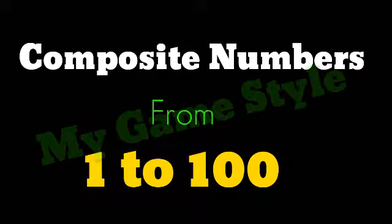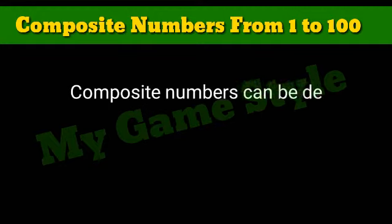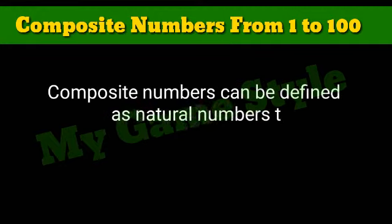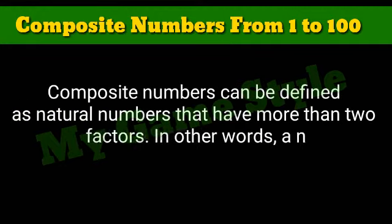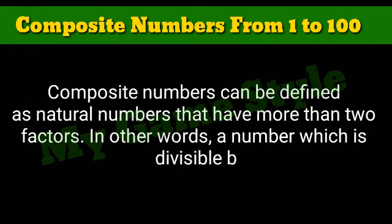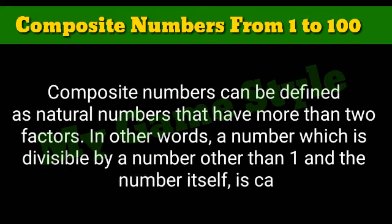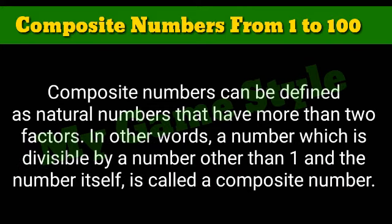Composite Numbers from 1 to 100. Composite numbers can be defined as natural numbers that have more than two factors. In other words, a number which is divisible by a number other than 1 and the number itself is called a composite number.